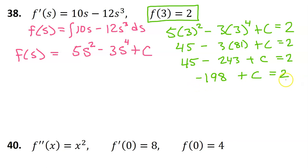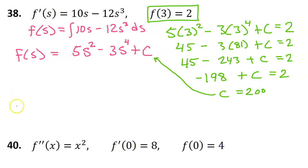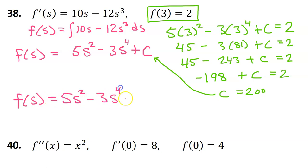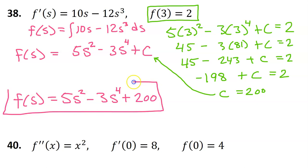Now we're going to add 198 to both sides, so we end up with c is equal to 200. Substituting that back in, we get the final answer: f of s is equal to 5s squared minus 3s to the fourth power plus 200. This is the solution to the differential equation.